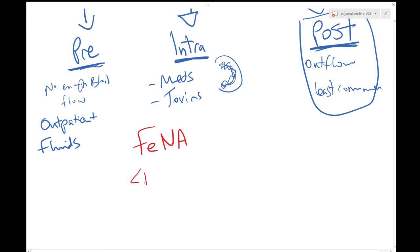If it's less than one percent, it means something, and if it's more than two percent, it means something else. If it's less than one percent, you're usually talking about a pre-renal cause. If it's more than two percent, you're talking about renal pathology. If it's in between, I'm not really sure.